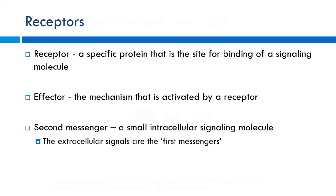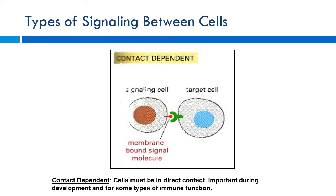Different types of cell signaling include contact-dependent signaling, where cells are right next to one another. Drugs don't really mimic this, but it's important for cancer — normally cells stop replicating when surrounded by their own cells, preventing unchecked replication. Cancer cells lose that and just continue growing. This mechanism is also important for immune function, like recognizing whether something is a bacteria or a normal human cell.